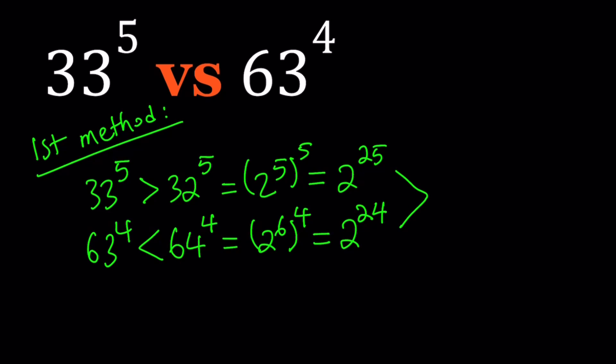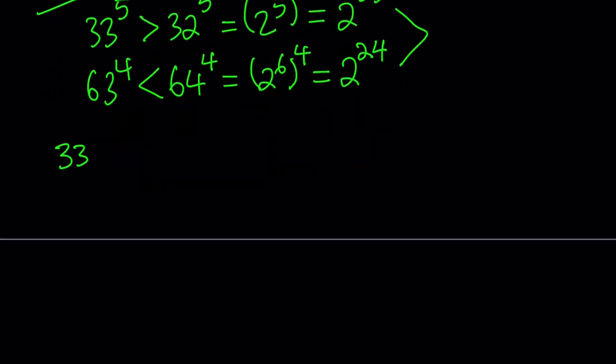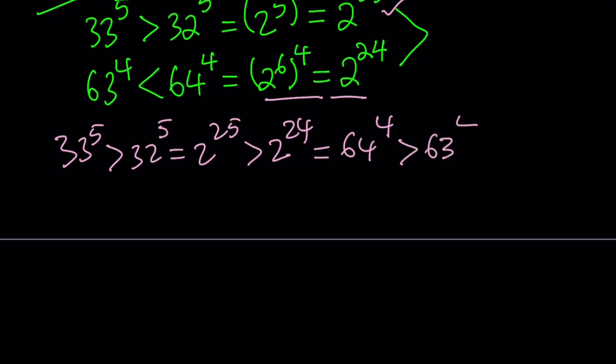Now, how can we put these two together? We have two inequalities and we can put these together as follows. We have 33 to the fifth power, that is greater than 32 to the fifth power, which is 2 to the power of 25. And then 2 to the 25th is greater than 2 to the 24th, which can be written as 64 to the fourth power because remember this is 2 to the sixth. And 64 to the fourth power is obviously greater than 63 to the fourth power.